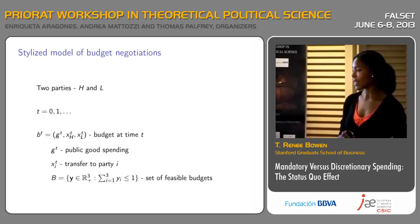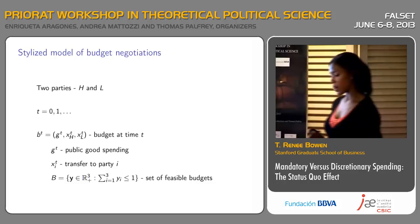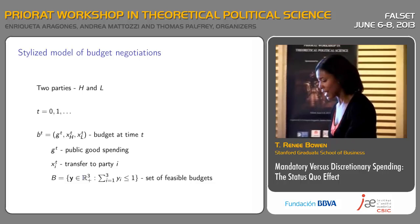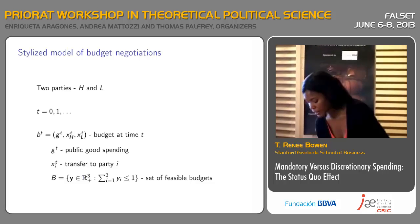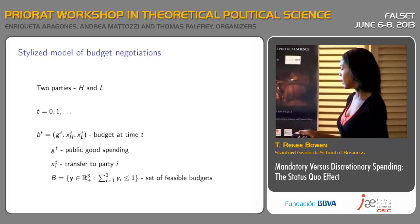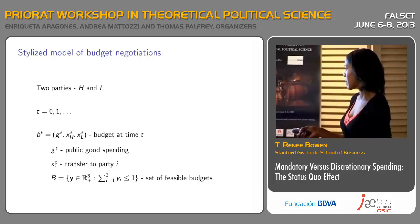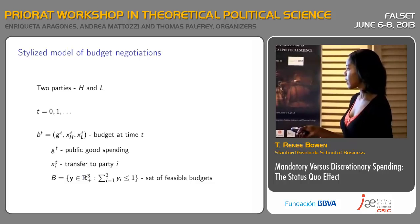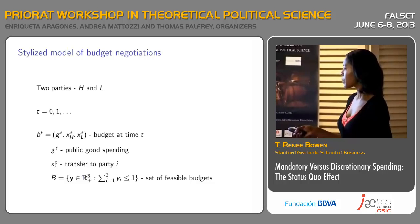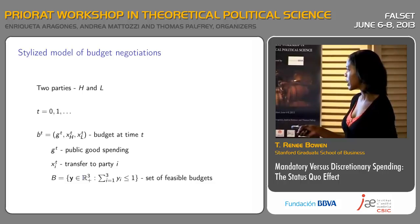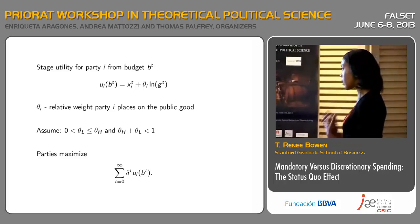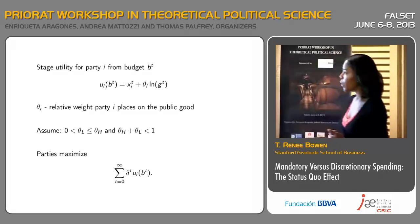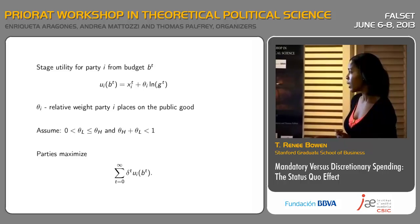Let's get right into the model. We've got two parties, H and L. Time is infinite and discrete. The budget is given by BT, and BT is an allocation to the public good GT, a transfer for party H denoted XTH, and a transfer for party L denoted XTL. The feasible budget — we're going to assume it's a dollar that arrives every period exogenously — so this budget needs to sum to no more than one.